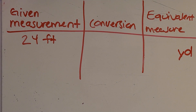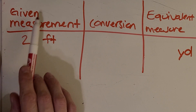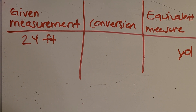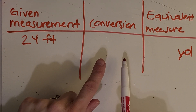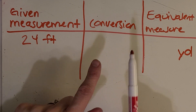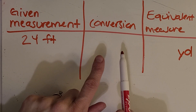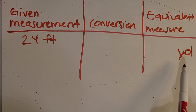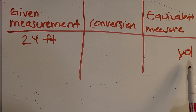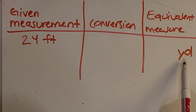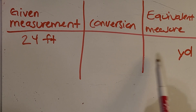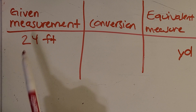I want to show you a really nice way to organize converting units. I always like to start with a given measurement — any measurement or units I give you goes in the first column. The middle section is to write down what you know about that type of conversion. And the last column is just the equivalent measure. In this case, we want to convert 24 feet into yards, and we've left a blank here for the answer.